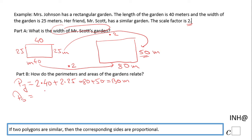Similarly, we're gonna do Mr. Scott's garden. The perimeter of Mr. Scott's garden will be 2 times 80, and this one is 50.